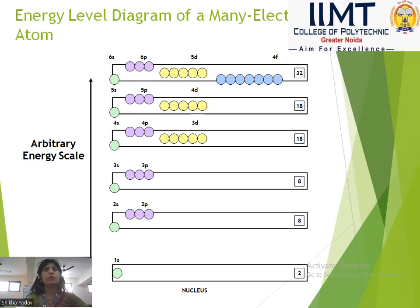This is how we fill the electrons. The maximum electrons per shell are: 2, 8, 8, 18, 18, 32.